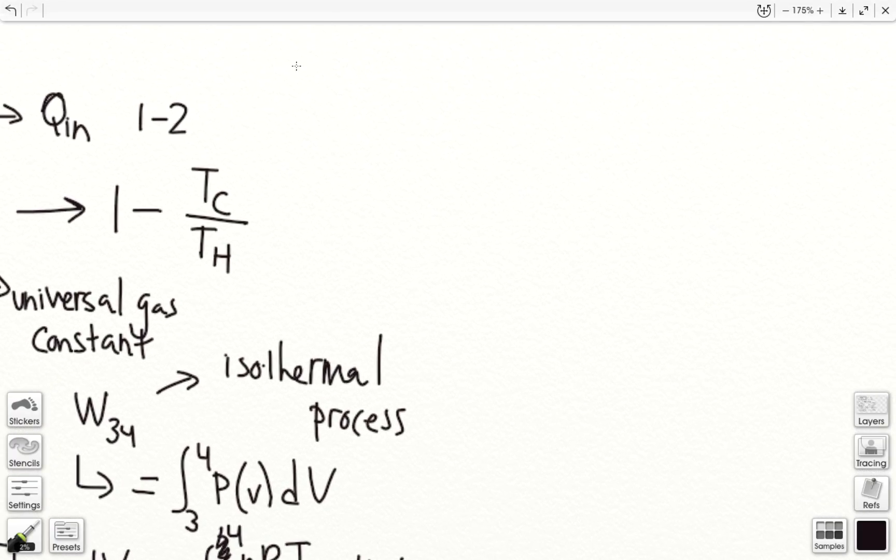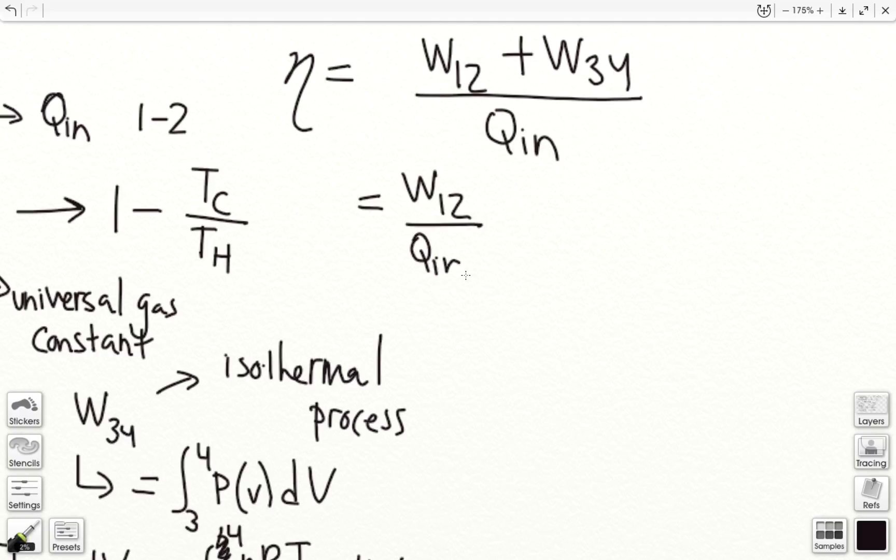Now I'm going to split this up. The reason I'm going to do this is because as I established earlier, I know that the work from 1 to 2 is equal to q in. So this is going to simplify to 1. So I'm going to have 1.